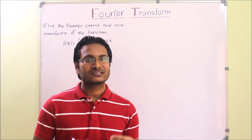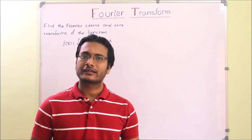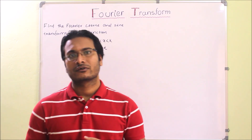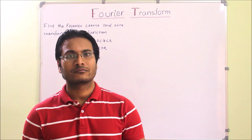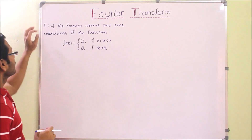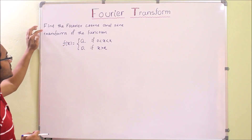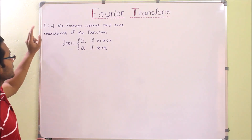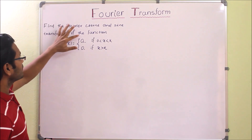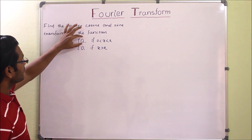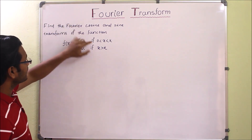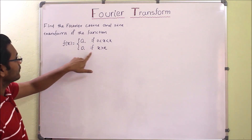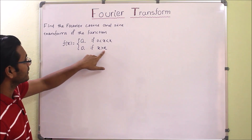Today we will see one simple but interesting problem of Fourier transform. The problem is to find the Fourier cosine and sine transforms of the function f(x), where f(x) equals a when x lies between 0 to k, and 0 if x is greater than k.